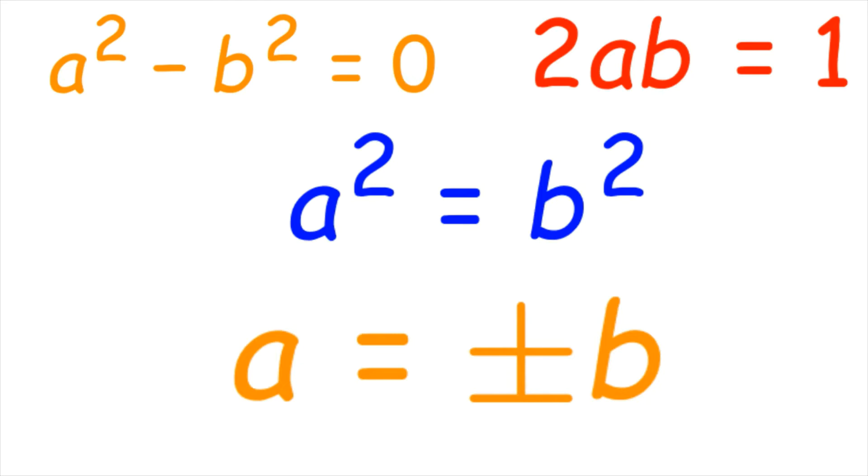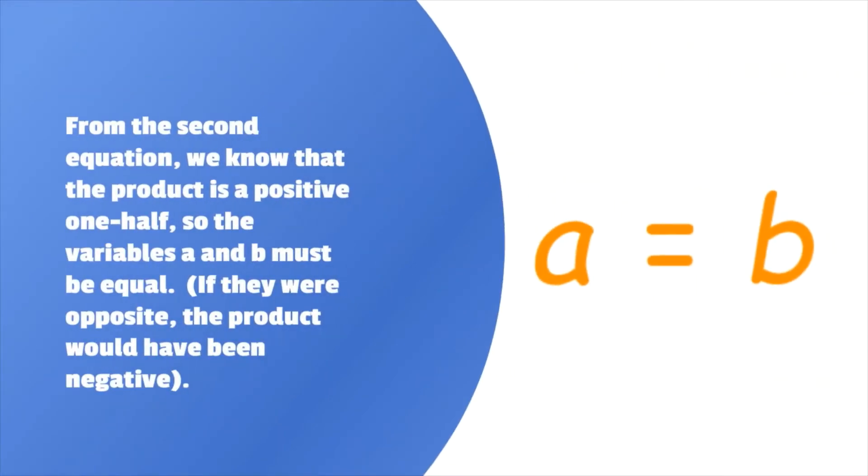From the first equation, we get a² = b², or taking the square root of both sides, a equals positive or negative b. From the second equation, we know the product is positive one half, so the variables a and b must be equal in sign. If they were opposite to each other, the product would have been negative.